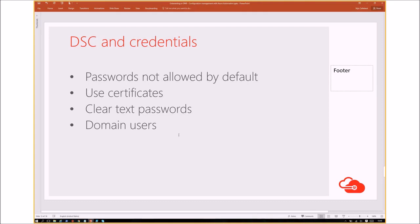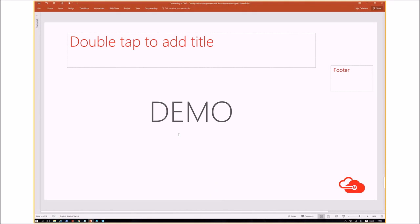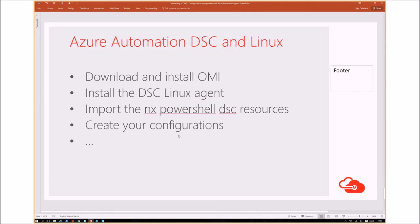Another topic is Azure Automation Desired State Configuration and Linux support. DSC is also possible with Linux, and Azure Automation supports it. Prerequisites are: download and install OMI, install the DSC Linux agent, and import the NX partial DSC resource modules available on PowerShell Gallery. Once those resources are available, you can create configurations specific for managing your Linux hosts.